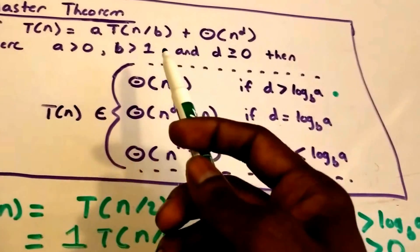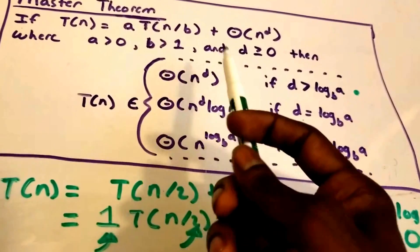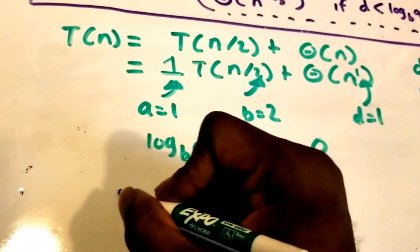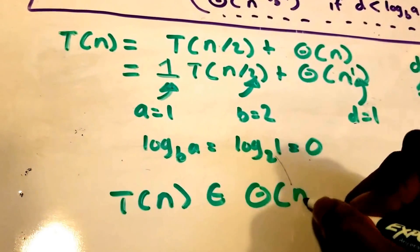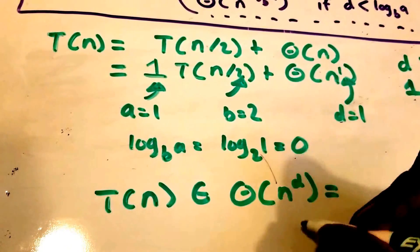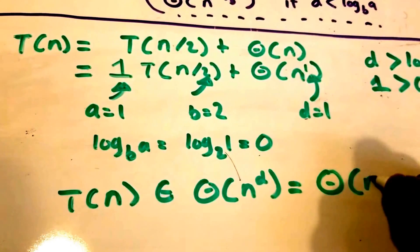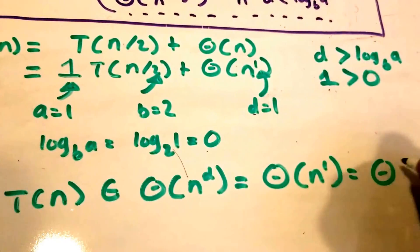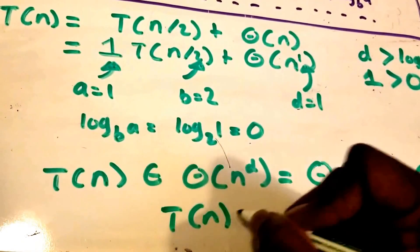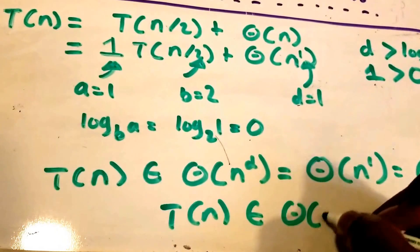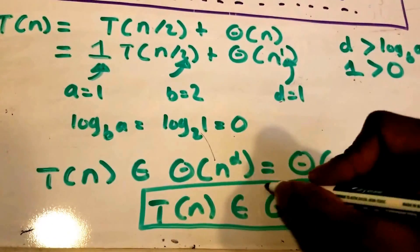Since we're in Case 1, that means T(n) ∈ Θ(n^d). So T(n) ∈ Θ(n^1), which equals Θ(n). Therefore, our function T(n) belongs to Θ(n).